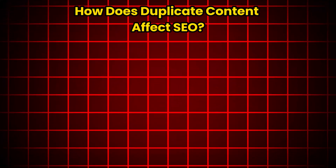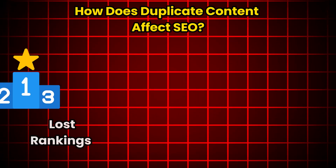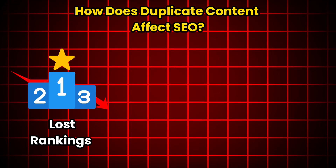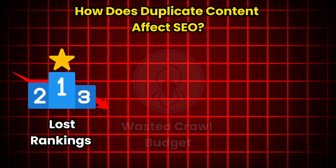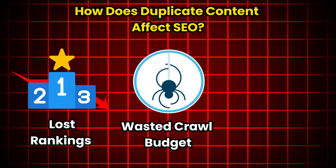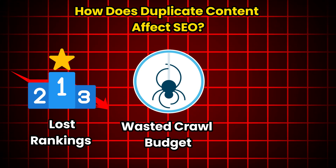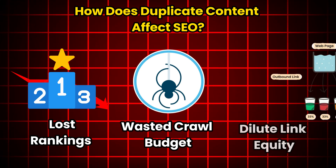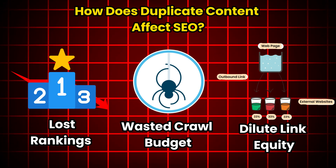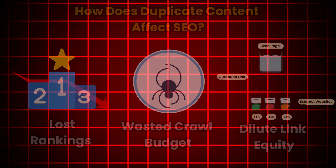How does duplicate content affect SEO? Here's the deal. Lost rankings: Google might pick the wrong version of your page to rank — not the one you want users to see. Wasted crawl budget: search engines spend time crawling duplicate pages instead of focusing on your unique content. Diluted link equity: links that should be boosting one page get split across duplicates, weakening their impact.